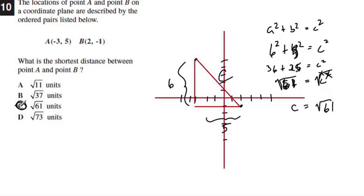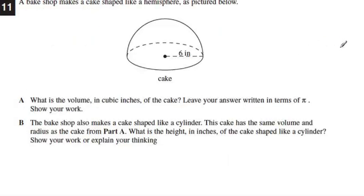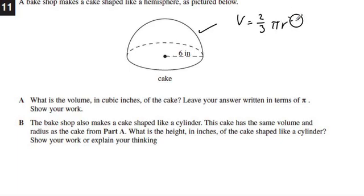If you get it wrong, don't just guess — go back and find your mistake. Number 11 we'll do in class. You should know how to find the volume of a sphere — and this is half a sphere. Find the volume of the sphere, then use the cylinder volume formula with those numbers to find the height. The volume of a sphere is 4/3 pi r cubed, and the volume of a cylinder is pi r squared times height. Work on that and we'll cover it more in class.